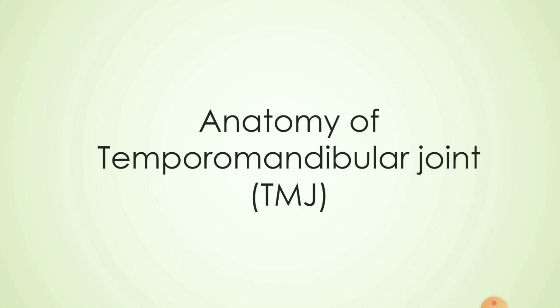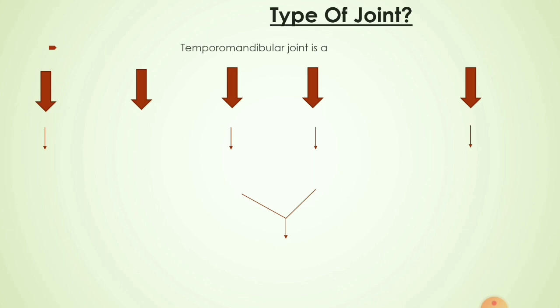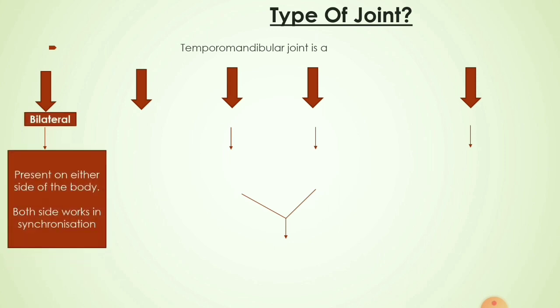Welcome to Akshay Bhandari's dental videos. Today I'll be discussing the anatomy of the temporomandibular joint. First, what type of joint is the temporomandibular joint? It is a bilateral joint because it is present on either side of the body and both sides work in synchronization. Secondly, it is a synovial joint because it consists of synovial fluid.